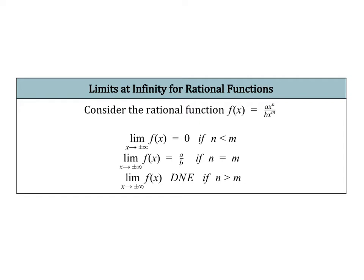When we're evaluating limits at infinity, we really only care about the terms with the largest degree. The idea is that while this first term is so incredibly large, the other terms are kind of insignificant to the overall value. So we really only care about the terms with the largest degree in the numerator and the denominator. There are three scenarios.